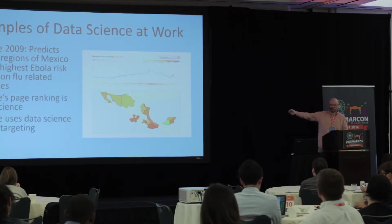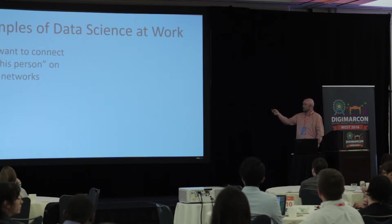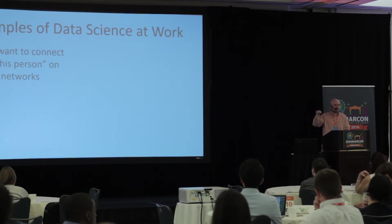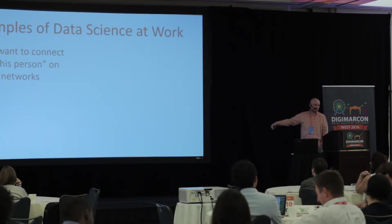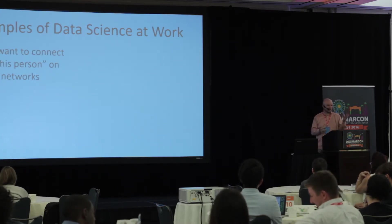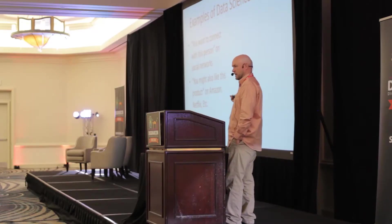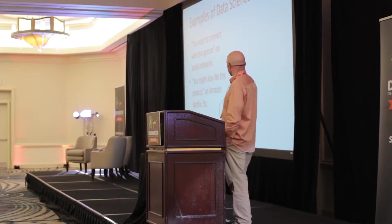Google's ad targeting is also a good example of data science at work. Moving more towards marketing — people you may want to connect with on a social network: data science is behind that, determining who, based on your connections, geographic location, where you work, is going to be someone you might want to connect with. Sometimes you see those suggestions pop up and think it's kind of scary that they knew that — they're using data science to determine that. You might also like this product on Amazon or Netflix — there's data science behind that, determining which products you're most likely to enjoy based on all the activity they're collecting on you.